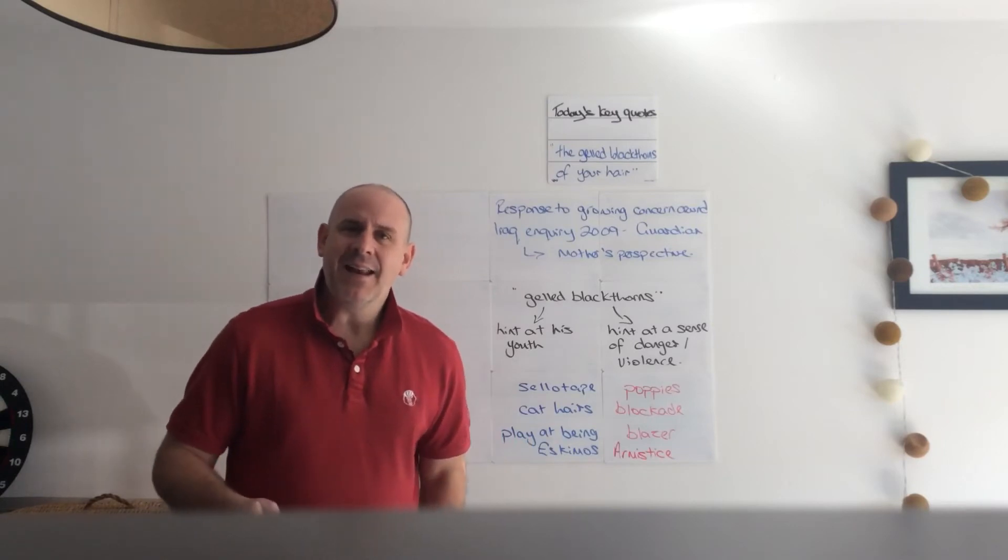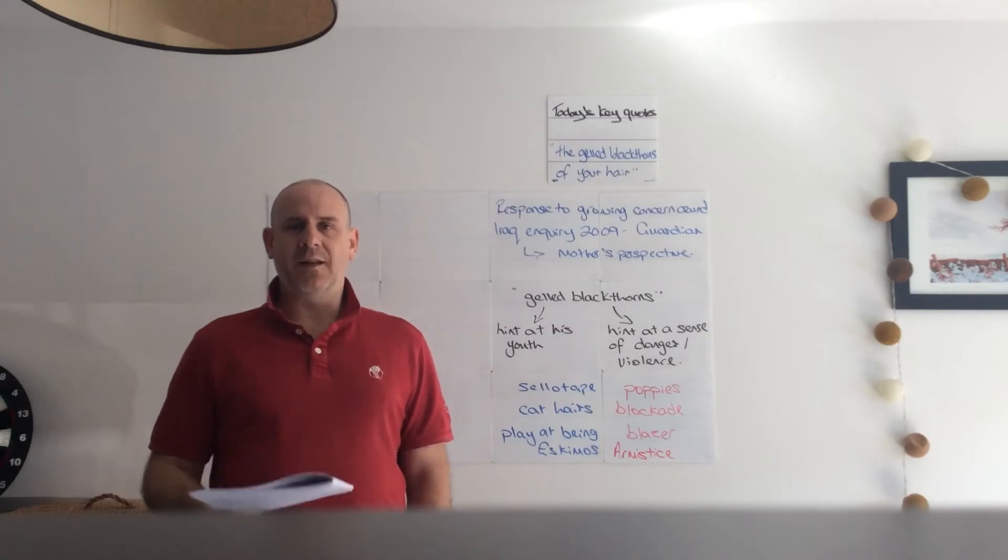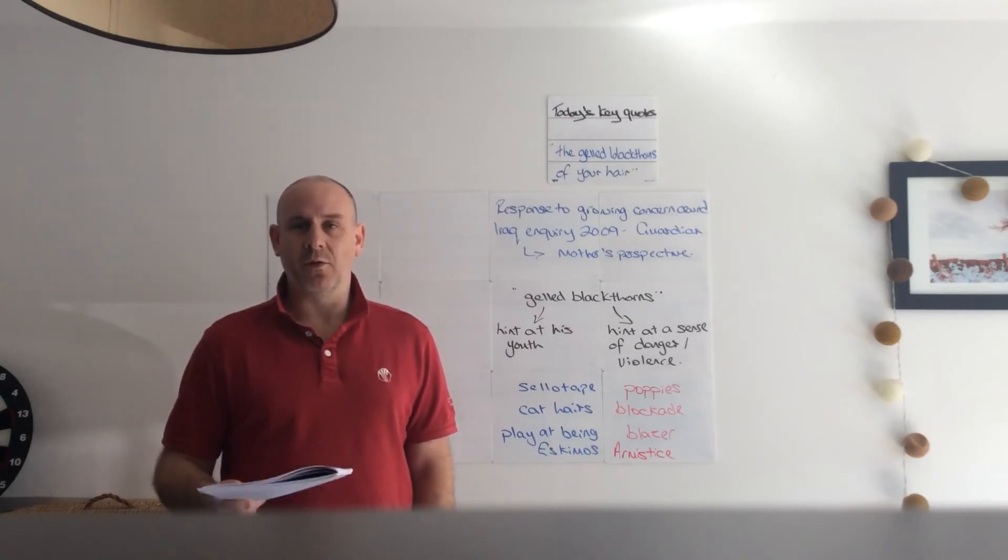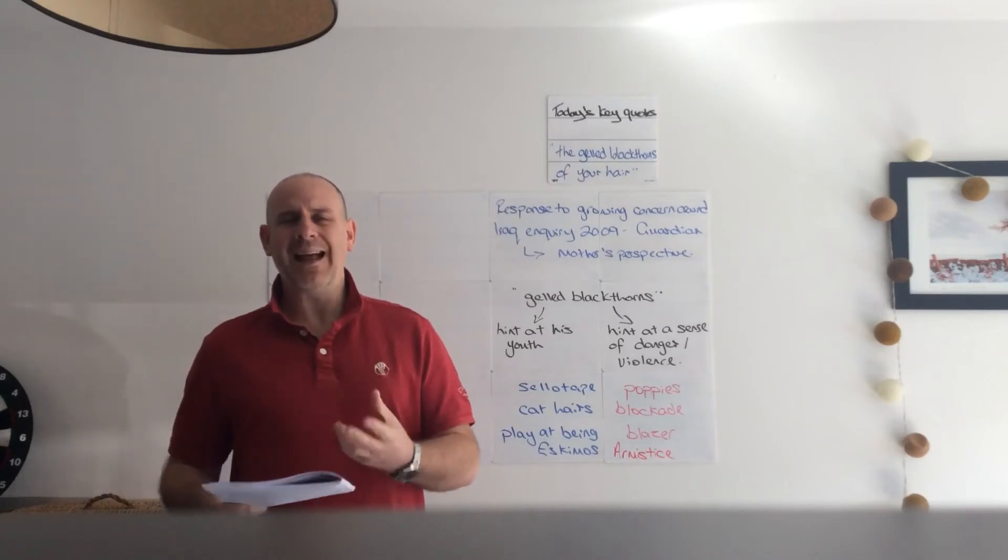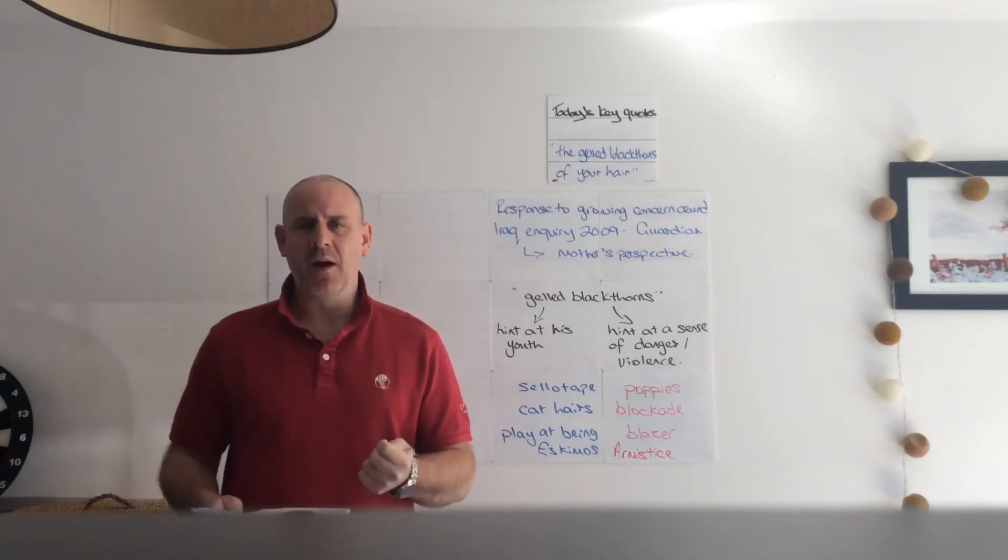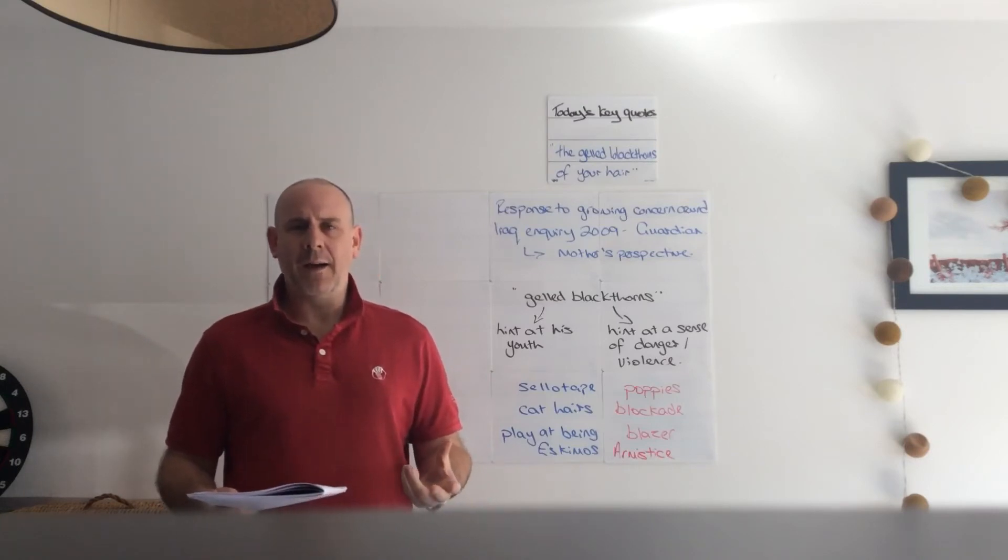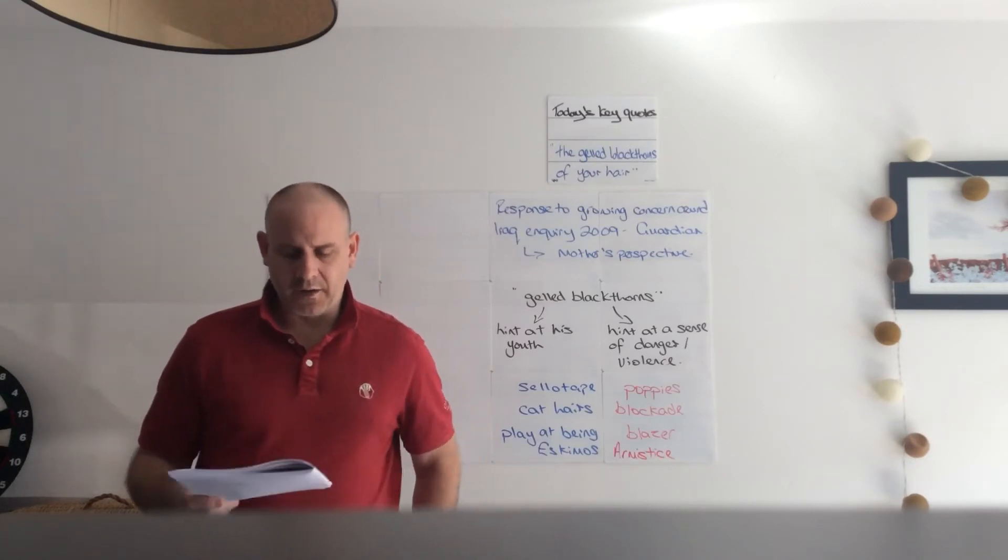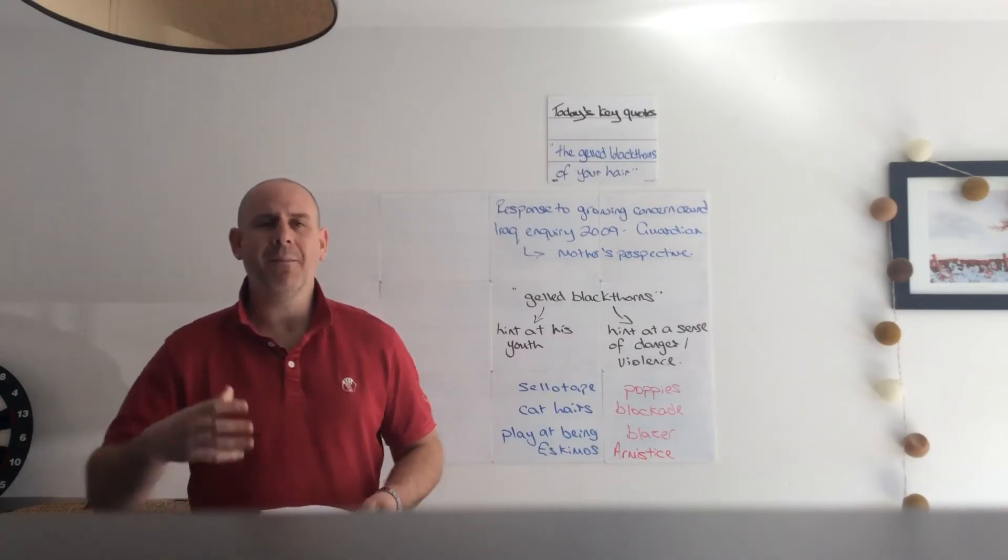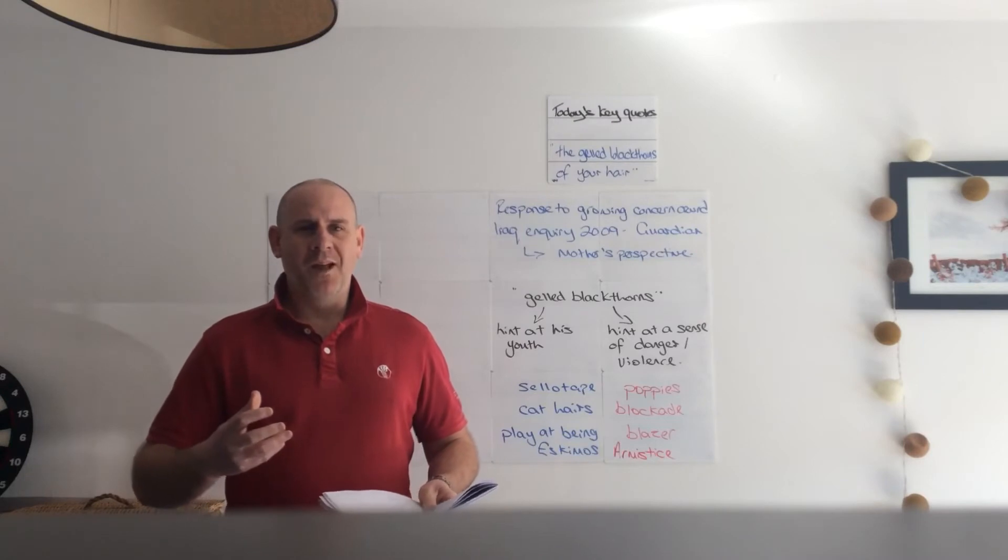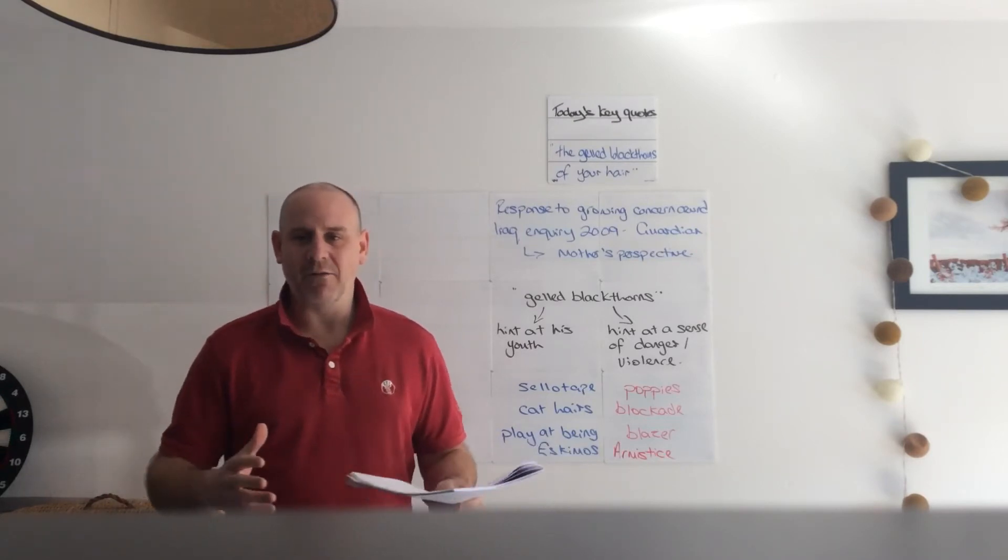And then we start to move into the more personal. And notice the use of the second person, 'you,' all the way through the poem. This is a memorial, almost a eulogy, a letter style, very deeply personal from the narrator to her son, from a mother to her son. Before you left, I pinned one onto your lapel. Now we imagine the way that mothers fuss over us, smooth the hair, make sure our ties are straight and our coats are straight.